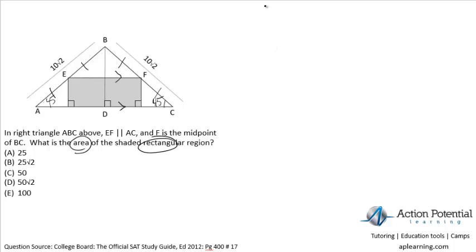The second thing that I know is that if E, and I'm just going to focus on this side here, if E is the midpoint of AB, and this entire piece here is 10√2, then AE must be half of that, EB must be half of that. So 10√2 divided by 2 gives me 5√2. That means that AE is 5√2, and EB is 5√2.